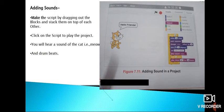Adding sounds. Make the script by dragging out the blocks and stack them on top of each other. Click on the script to play the project. You will hear a sound of the cat that is meow and drum beats. Two sound blocks are Play Sound Meow Until Done and Play Drum 48 for 0.2 beats. Play Sound Until Done block will play the specified sound. The script will pause until the sound has finished playing. Play Drum for Beats block plays a drum sound for a specified number of beats. You can change the drum type by clicking the drop down arrow next to the number and change the number of beats by changing the value in the beats block.